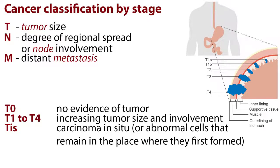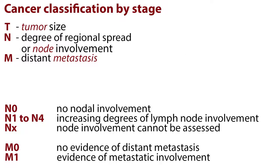Cancers are also classified according to their stage. The most commonly used method is called TNM staging. T stands for tumor size, N is the degree of regional spread or node involvement, and M stands for distant metastasis. T0 represents no evidence of tumor; T1 to T4 represents increasing tumor size and involvement; and TIS represents carcinoma in situ, or abnormal cells that remain in the place where they first formed. N0 represents no nodal involvement, N1 to N4 signifies increasing degrees of lymph node involvement, and NX indicates that node involvement cannot be assessed. M0 represents no evidence of distant metastasis, and M1 represents evidence of metastatic involvement.